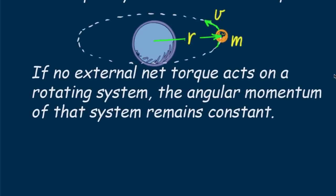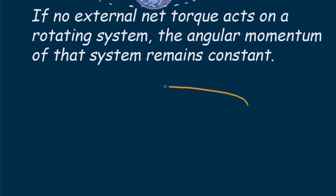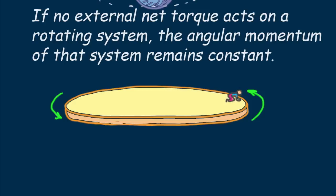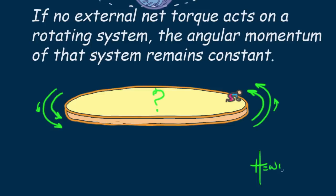Here's a question to leave you with: suppose you're at an amusement park and you sit in the middle of a large rotating turntable that is set spinning and then allowed to spin freely. When you crawl toward the edge of the turntable, does its rotational rate increase, decrease, or remain unchanged? What physics principle supports your answer? Until next time — good rotation!